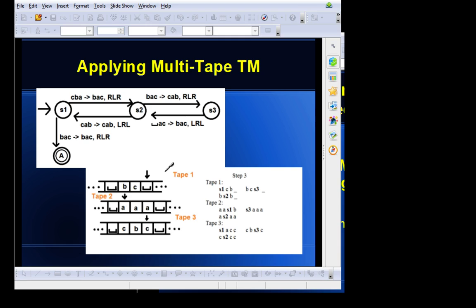And now, the head for tape 1 is pointing to a space. The head of tape 2 is pointing to A, and the head of tape 3 is pointing to C. So, currently in state 3, transitioning to state, that will back to state 2 on step 4, we will see that blank AC will change to BAC. And the heads will move left, right, and left.